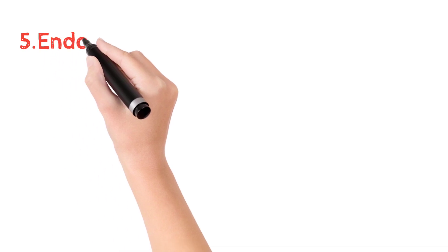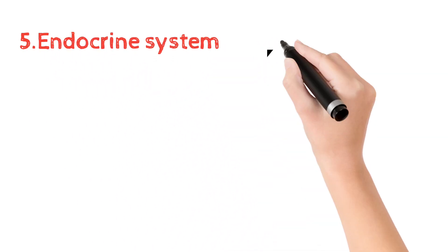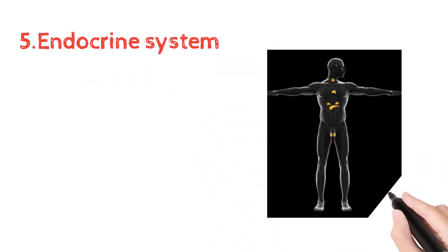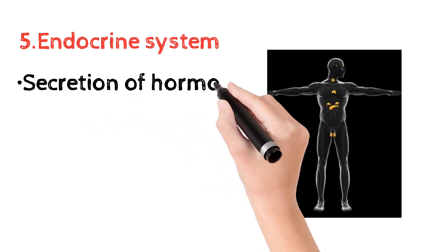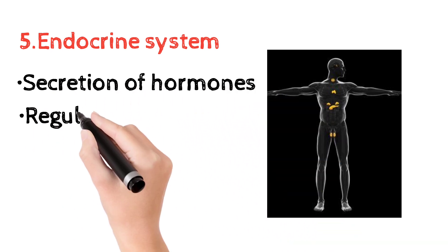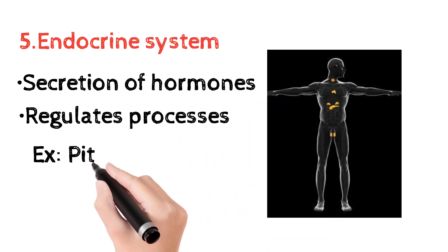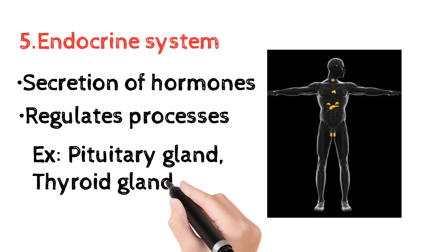Next is the endocrine system, which is responsible for the secretion of hormones and the regulation of body processes. Examples of glands include the pituitary, thyroid, and pancreas.